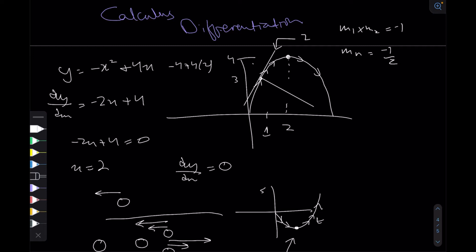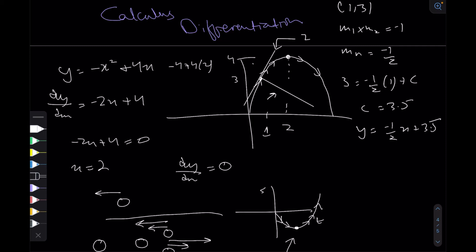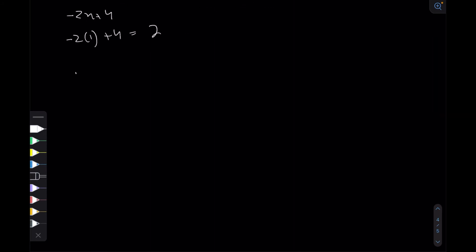To find the equation of any line you need two things: the gradient and a point. We know this normal passes through (1, 3) and has gradient negative one half. So 3 equals negative half times 1 plus c, giving c equals 3.5. Therefore the equation of the normal is y equals minus one half x plus 3.5.